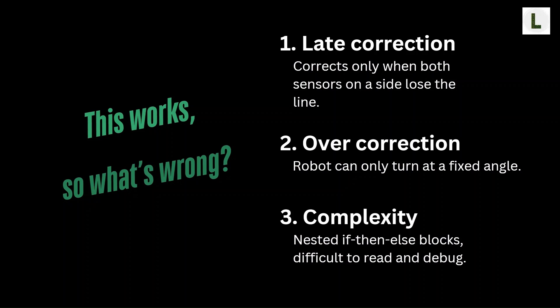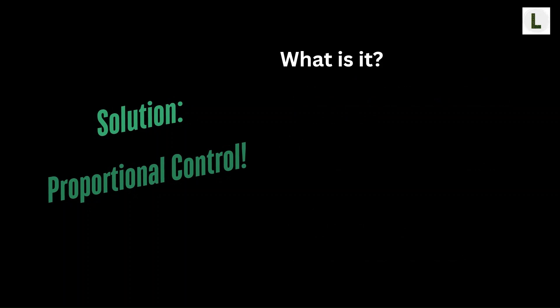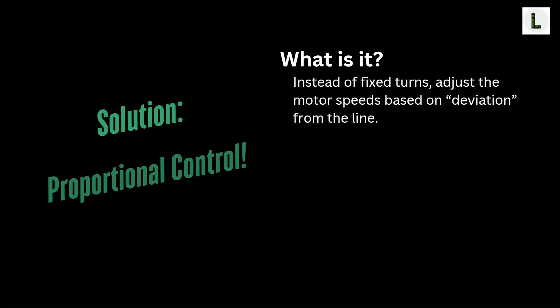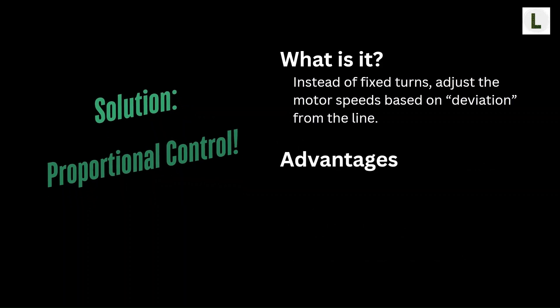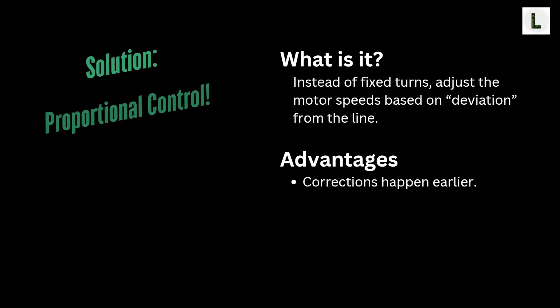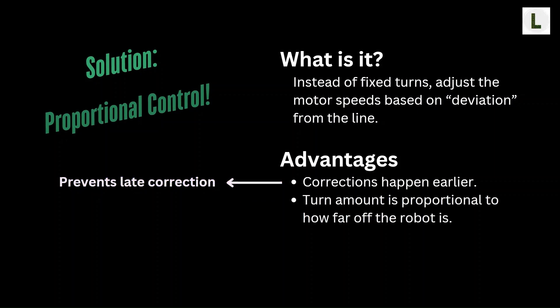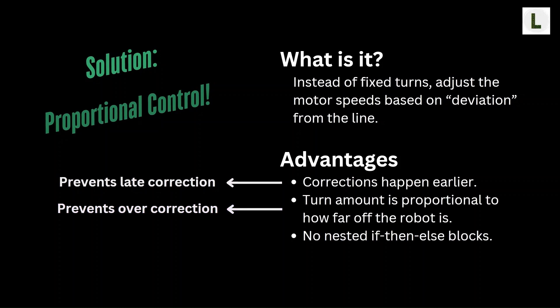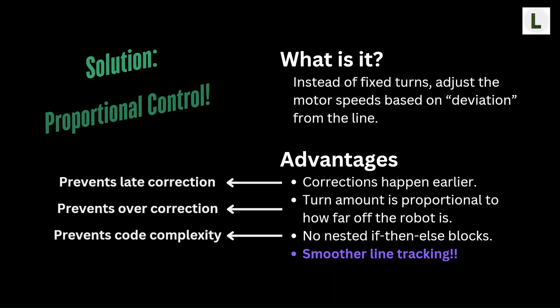One solution that addresses these three problems is proportional control. Instead of fixed turns, proportional control adjusts the motor speeds based on how far off the robot is from the line. Corrections happen earlier and more smoothly, preventing late correction. The turn amount is proportional to how far off the robot is, addressing overcorrection. And finally, the code becomes cleaner with no nested if-then-else blocks, reducing complexity. Overall, this results in better line tracking and smoother movement.